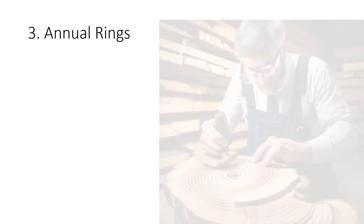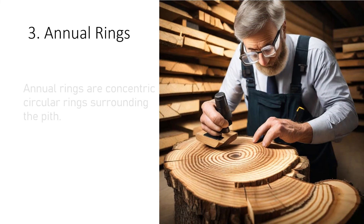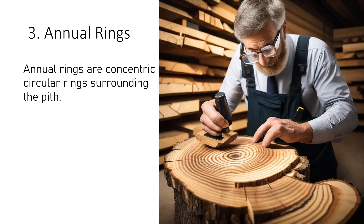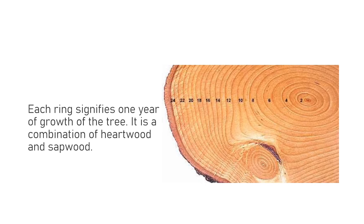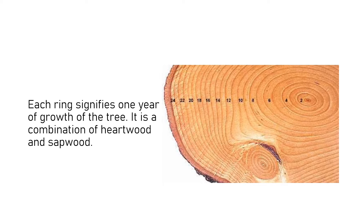Annual rings, also called growth rings, are concentric circular rings surrounding the pith. Each ring signifies one year of growth of the tree. The cross section shows 24 distinct annual rings in the figure. Annual rings are a combination of heartwood and sapwood.